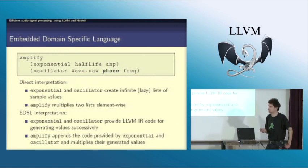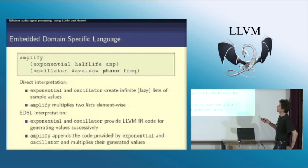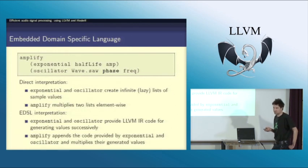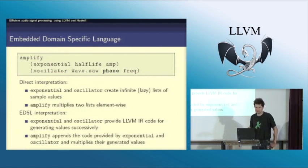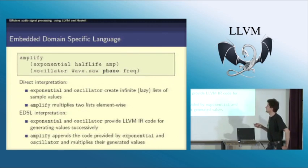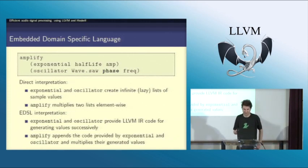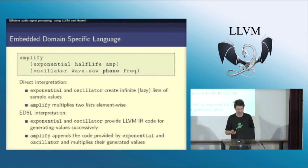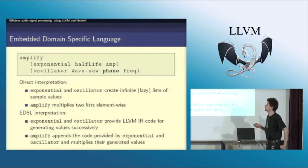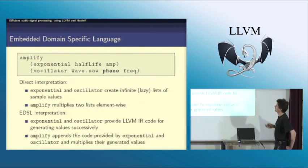I now interpret these terms differently. The exponential curve just provides LLVM IR code, and the oscillator as well. The Amplify function assembles these code blocks and creates a code block for the whole effect.